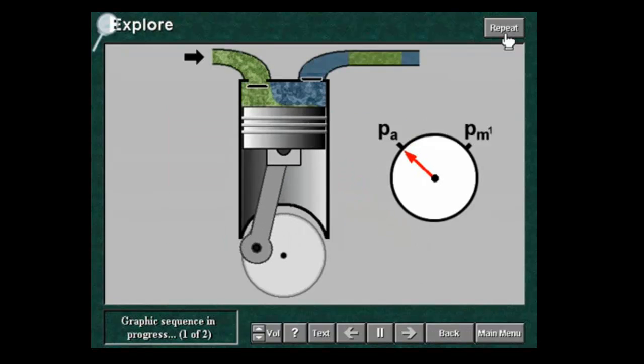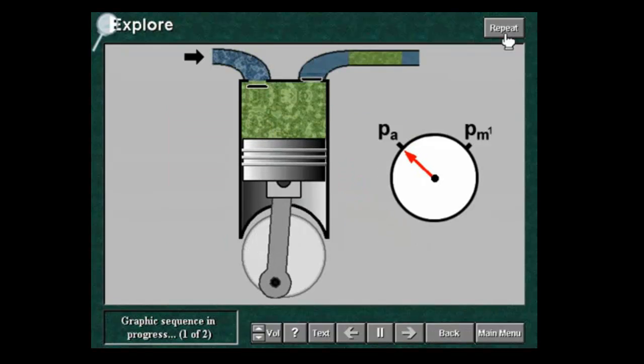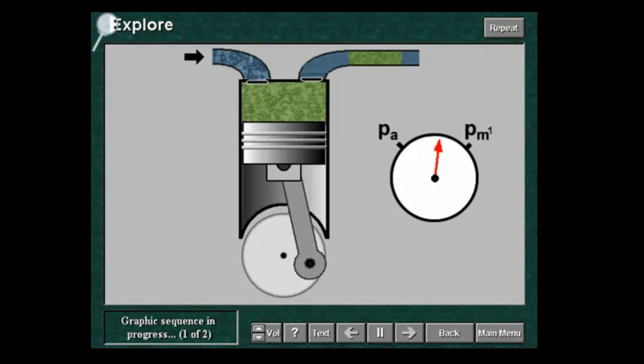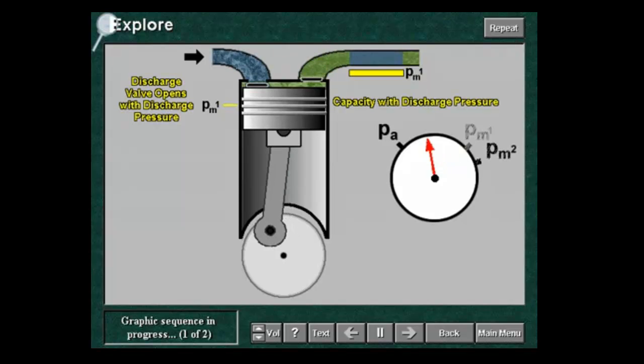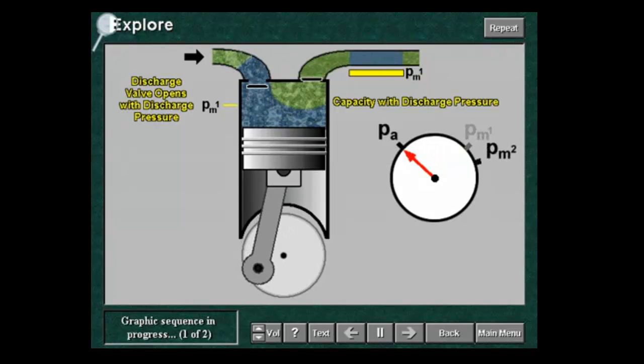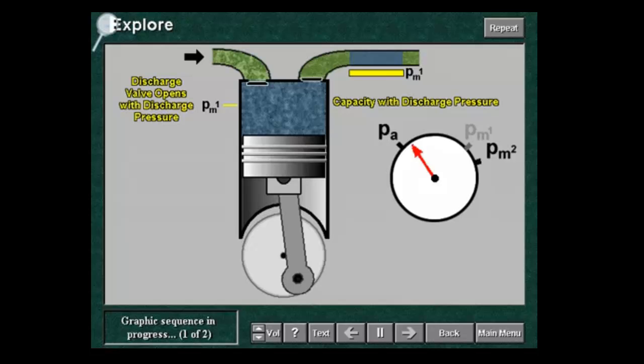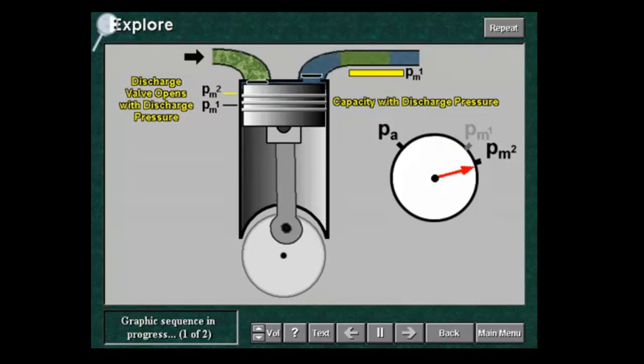Consider now a single stage compressor. If a higher delivery pressure happens, the compression ratio is increased and volumetric efficiency decreases. Less gas is delivered to the user and the compressor capacity is decreased.